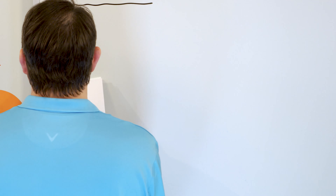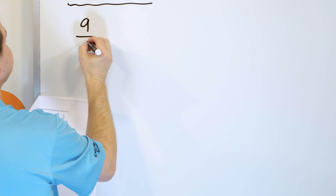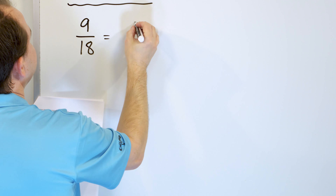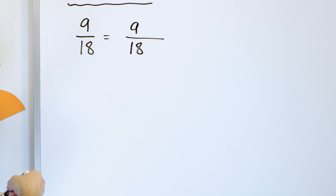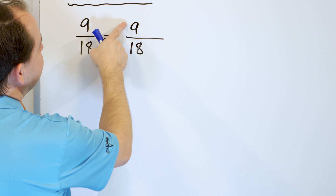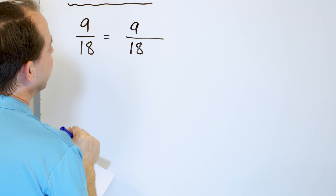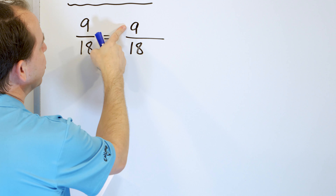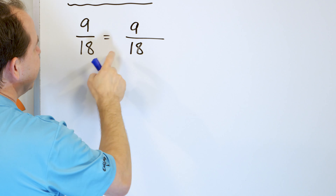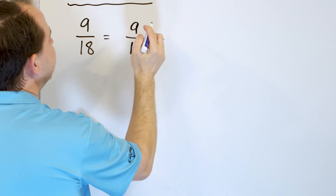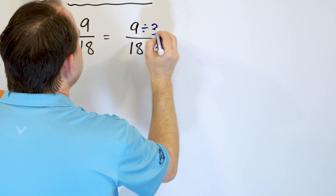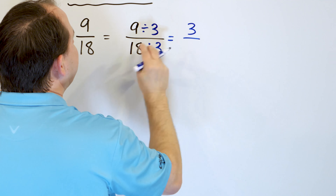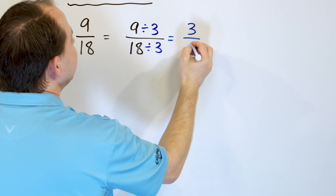Let's take a look at the problem nine-eighteenths. Let's simplify. Nine-eighteenths — this is an excellent example. We can divide the top and bottom by three, because both nine and eighteen are divisible by three. Divide top by three, divide bottom by three. Nine divided by three is three, and eighteen divided by three is six.